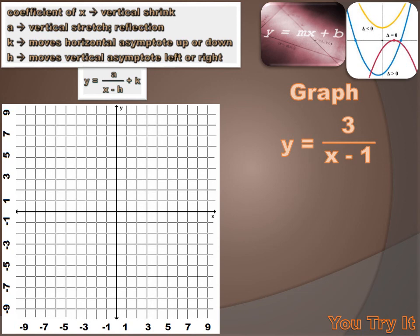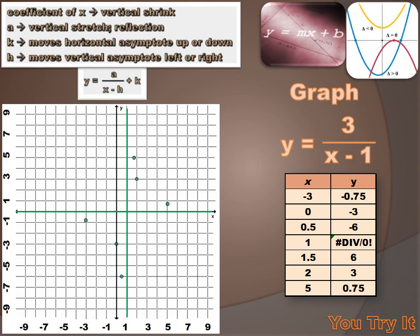I want to put some asymptotes in first. My horizontal asymptote is defined by k: y equals k. But my k value is zero — I'm not subtracting something from the fraction with x in it — so my horizontal asymptote will just be the x-axis. My vertical asymptote is x equals h, and my h value is 1, so I'll draw a line representing my vertical asymptote at x equals 1. Now I'll pick some values of x relative to the intersection of those two asymptotes, calculate the y values, plot those points, draw curves between them, and that is the graph of the rational function y equals 3 over x minus 1.